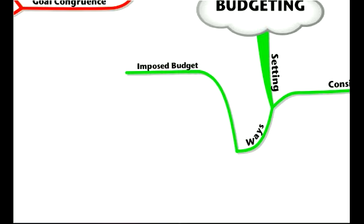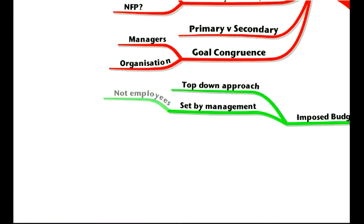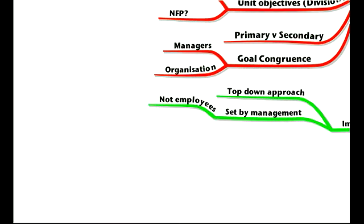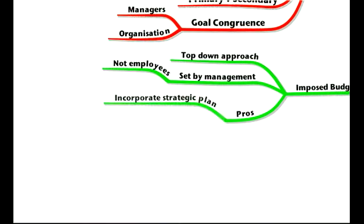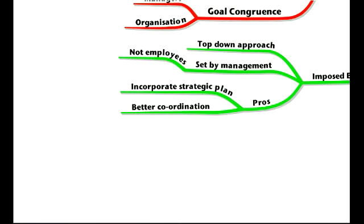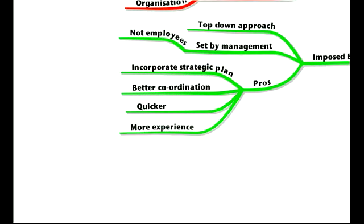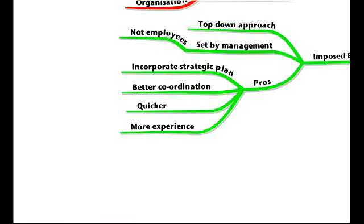There are different ways to set the budget. An imposed budget is a top-down approach — it's set by management, not employees. On the plus side, it can incorporate the strategic plan because senior managers are well aware of what the organisation is seeking to achieve. It will also use better coordination since senior management have an overall view of the firm. It's going to be quicker, as the senior management set and impose the budget. They will also have more experience and expertise, so maybe they should be in charge of setting the budget.